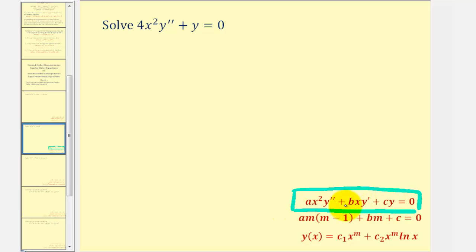For each term, the degree of the coefficient is equal to the order of the derivative. For example, looking at the first term, the coefficient has degree two and the term also contains the second derivative. Looking at the second term, we have x to the first, so the degree of the coefficient is one and the term also contains the first derivative. The third term is a constant times y, and it's equal to zero, making it a homogeneous differential equation.